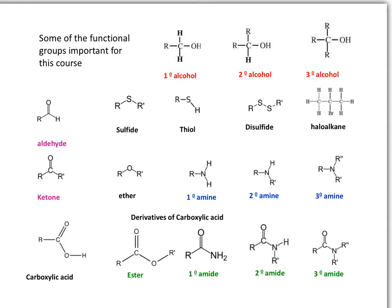Carbon can also bond to oxygen to make the family of ethers. When only one carbon is bonded to an oxygen, that is the family of alcohols. When the oxygen is bonded to two carbons, that is the family of ethers. Ethers are unreactive substances that are used as solvents.